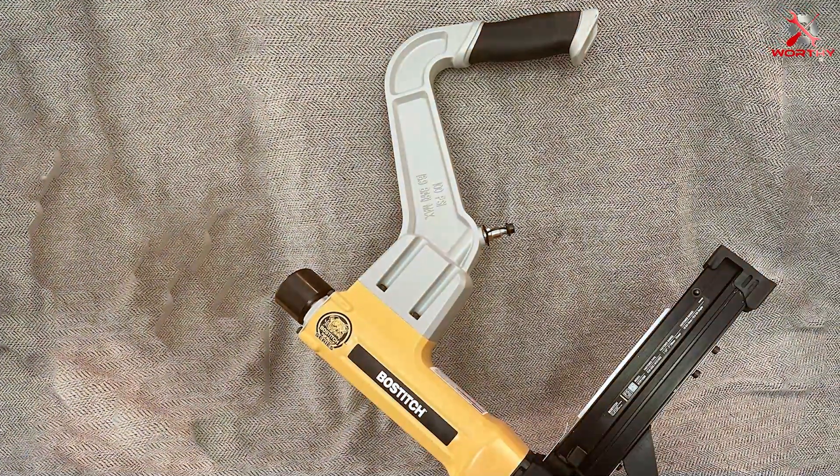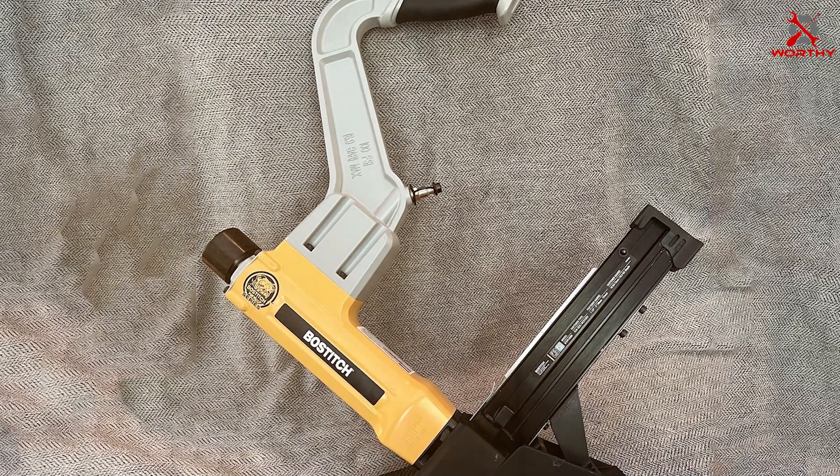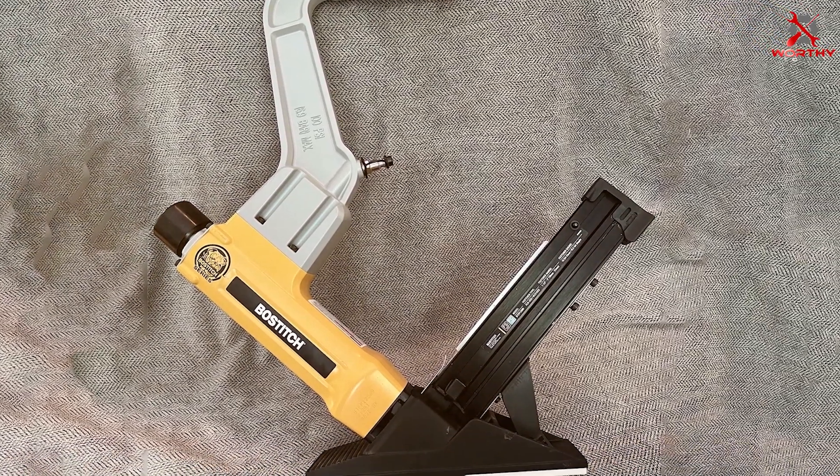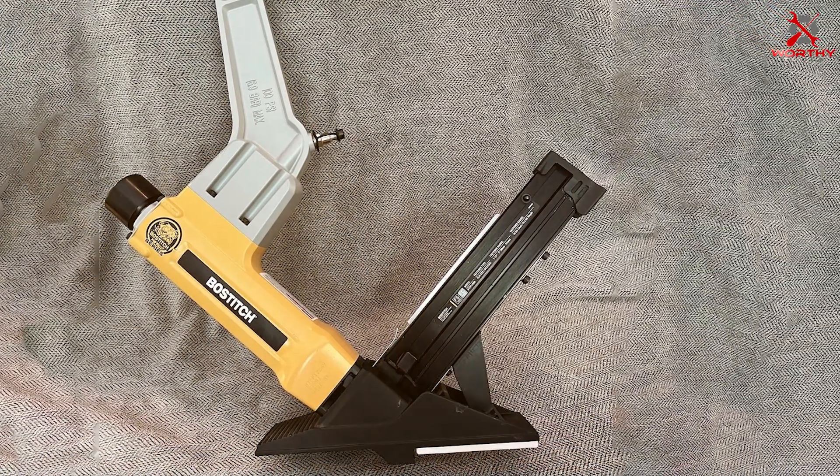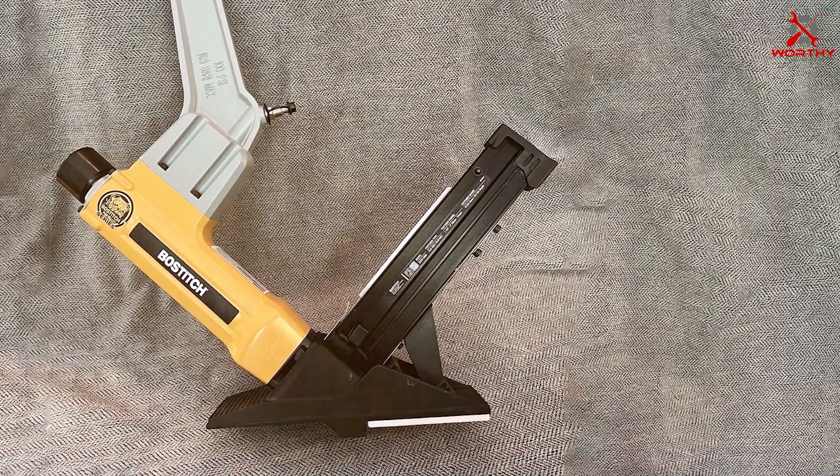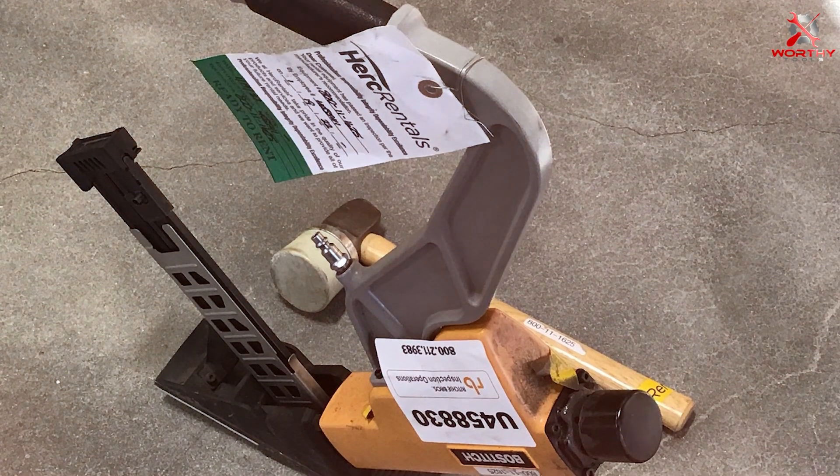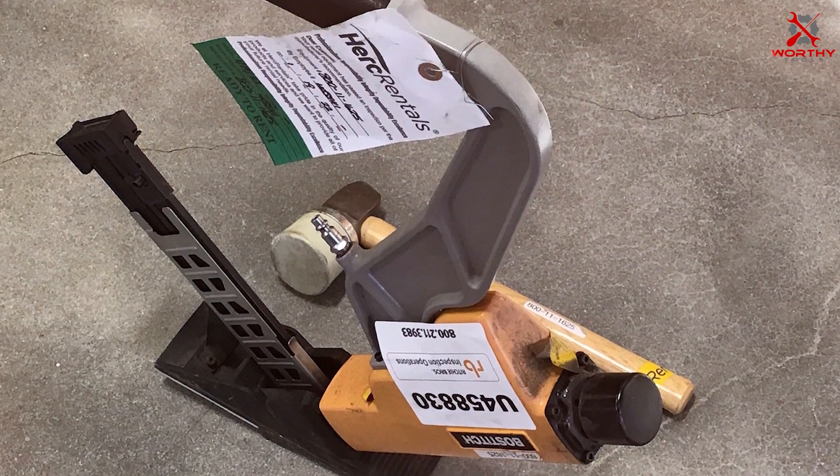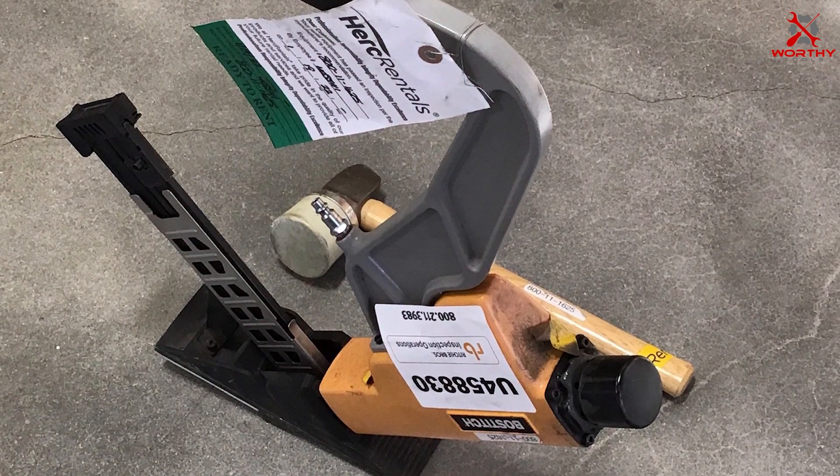Quality-wise, BOSTITCH doesn't disappoint. The BTFP12569 is built to withstand the rigors of heavy use, indicative of its robust construction. The nailer operates smoothly, reducing the likelihood of jamming, a common issue in lesser models.